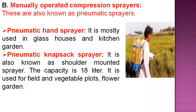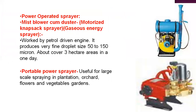The manually operated compression sprayers are also known as pneumatic sprayers. The first type is the pneumatic hand sprayer, mostly used in glasshouses and kitchen gardens. The second type is the pneumatic knapsack sprayer, also known as a shoulder-mount sprayer. The tank capacity is 18 liters and it is used for fields, vegetable plots, flower gardens, and kitchen gardening.